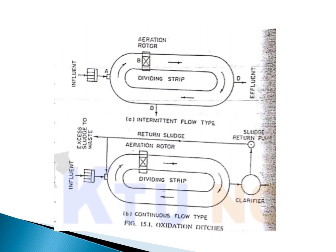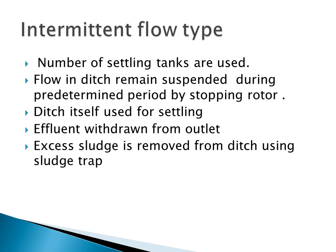The key difference is that in intermittent operation, flow is not continuous, whereas in continuous flow, sewage flows into the oxidation ditch 24 hours continuously. In intermittent flow type there is no clarifier, whereas in continuous flow type a clarifier is used. In intermittent operation, the ditch itself acts as a settling tank by stopping the rotor during a predetermined period, allowing sludge to deposit at the bottom. The effluent is withdrawn from the outlet and excess sludge is removed using a sludge trap.